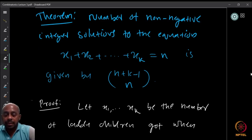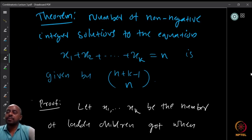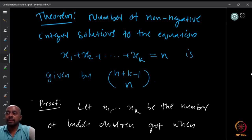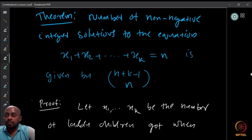Here is a theorem: the number of non-negative integer solutions to x1 + x2 + ... + xk = n is given by C(n+k−1, n).